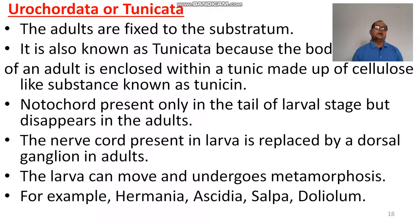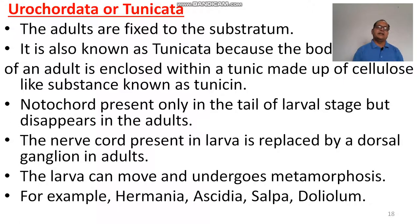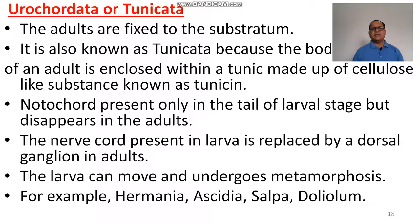Now, the first subphylum is Urochordata. Urochordata is also called Tunicata. The adults are fixed to the substratum — all tunicates are fixed and not free-moving. They are known as tunicates because their body is surrounded by a substance made up of tunicin, a cellulose-like material. The notochord is present only in the tail in the larval stage but disappears in the adult stage. The nerve cord present in the larva is replaced by a dorsal ganglion in adults. The larva can move and undergoes metamorphosis.